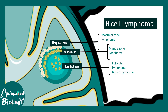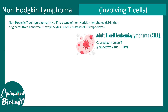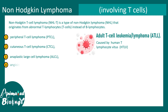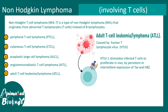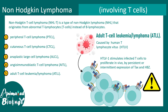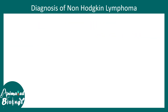In short, we looked at how different zones of the lymph node are affected in B cell lymphoma. These are the non-Hodgkin's lymphomas that affect B cells in most cases. Now regarding non-Hodgkin's lymphoma involving T cells: there are peripheral T cell lymphomas, cutaneous T cell lymphomas, anaplastic large cell lymphomas, and many more. One of the most common is adult T cell leukemia or lymphoma, which happens due to HTLV virus infection. This virus infects T cells and leads to overexpression of tax and HBZ genes, causing over-proliferation of T cells.